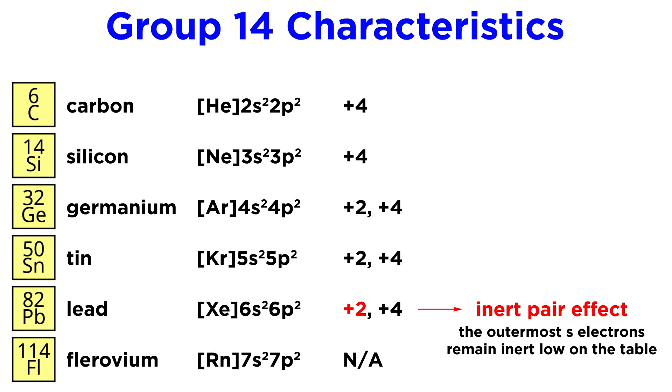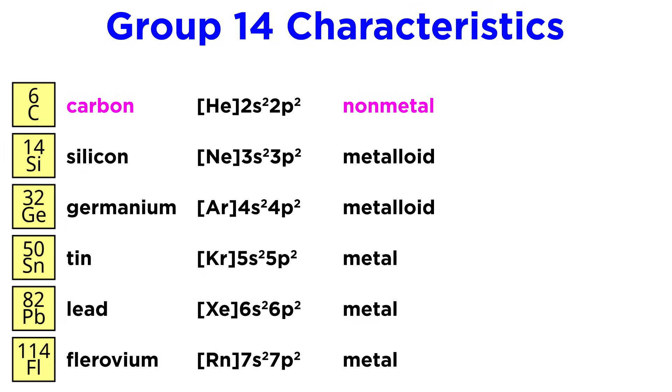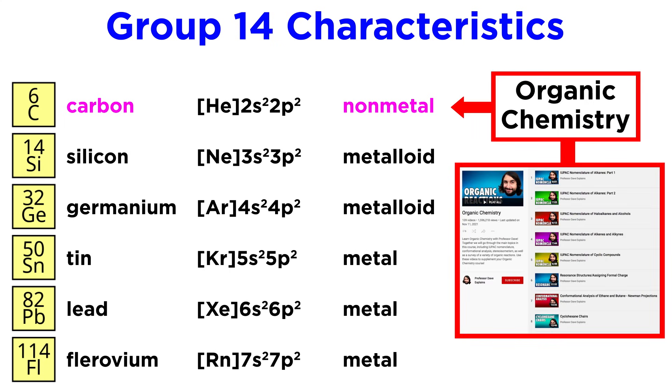Except for in lead where plus 2 becomes more common due to the inert pair effect. Again, this is where the S electrons in the outermost shell tend to remain unshared in post-transition metals. In this group we also encounter our first non-metal apart from hydrogen, and that is the ubiquitous carbon, which we know so much about from organic chemistry. Since that entire series was essentially all about what carbon can do, we won't bother summarizing any of that here.